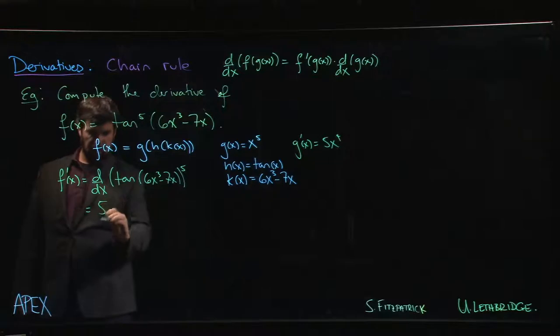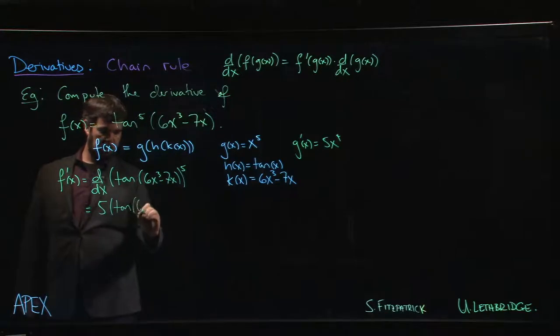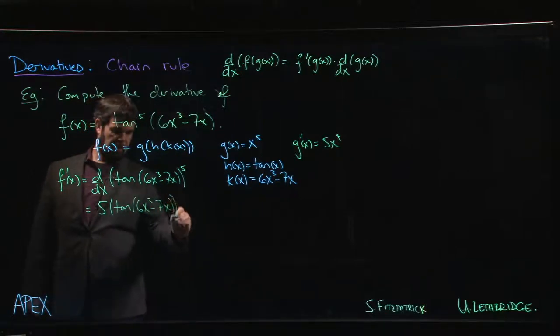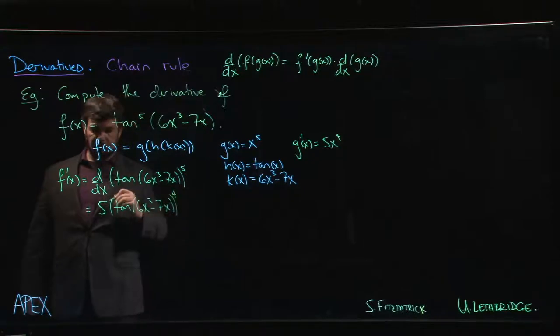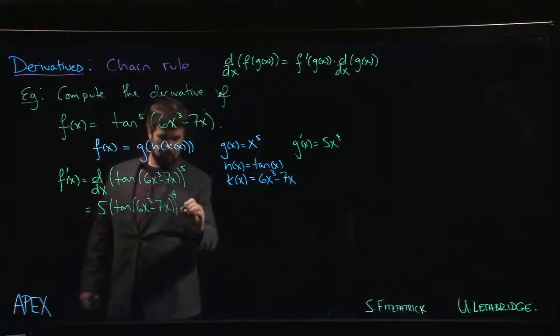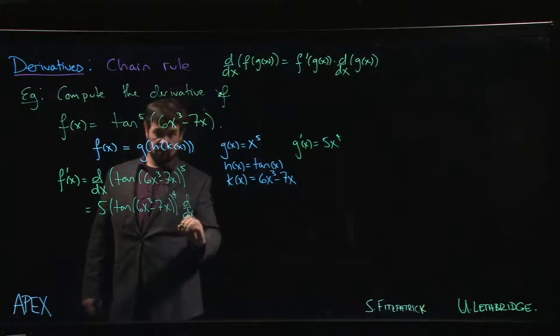not x, but whatever was inside the power function here, which is tan of 6x cubed minus 7x, now raised to the fourth power, but we have to multiply by the derivative of what's inside.